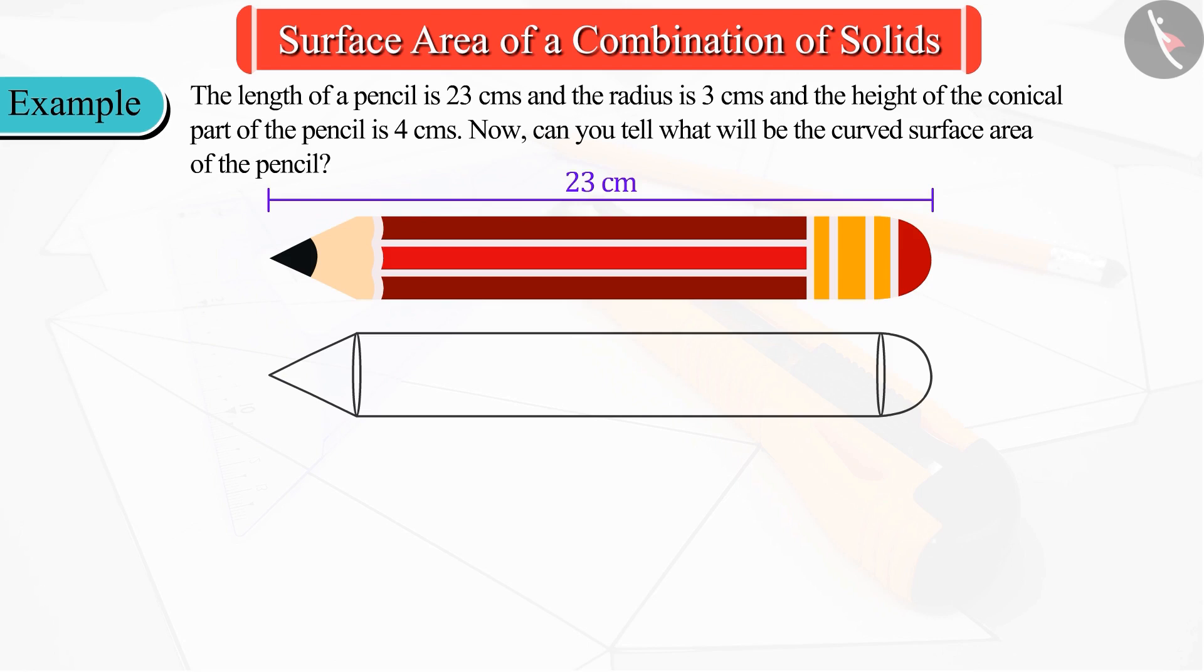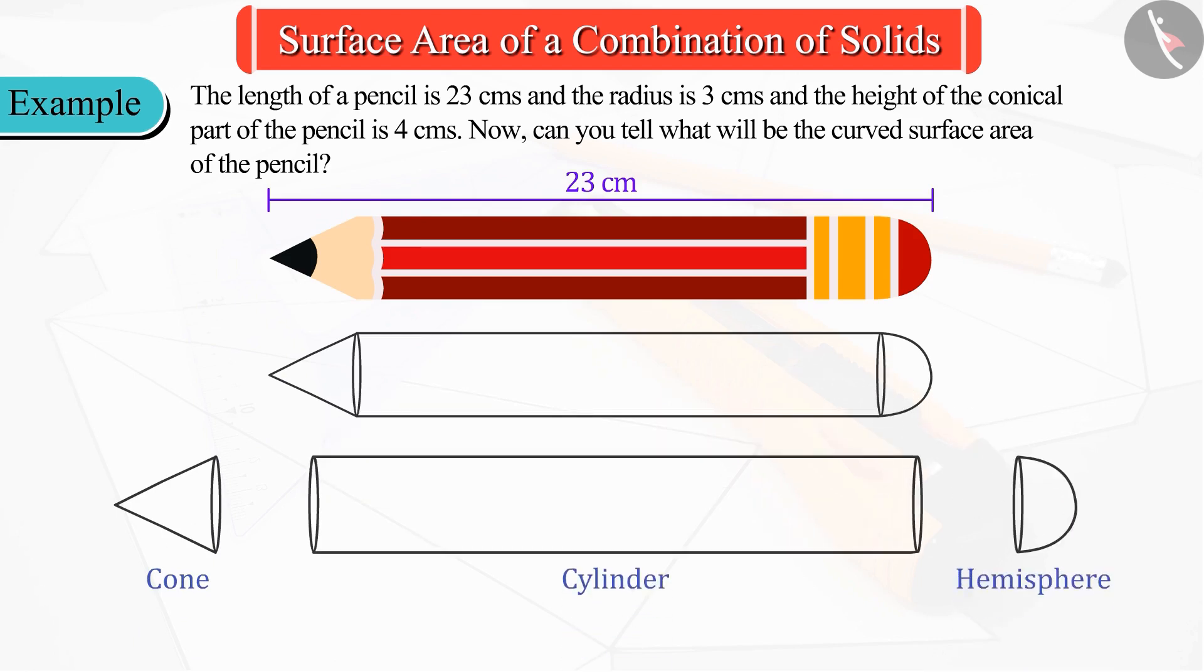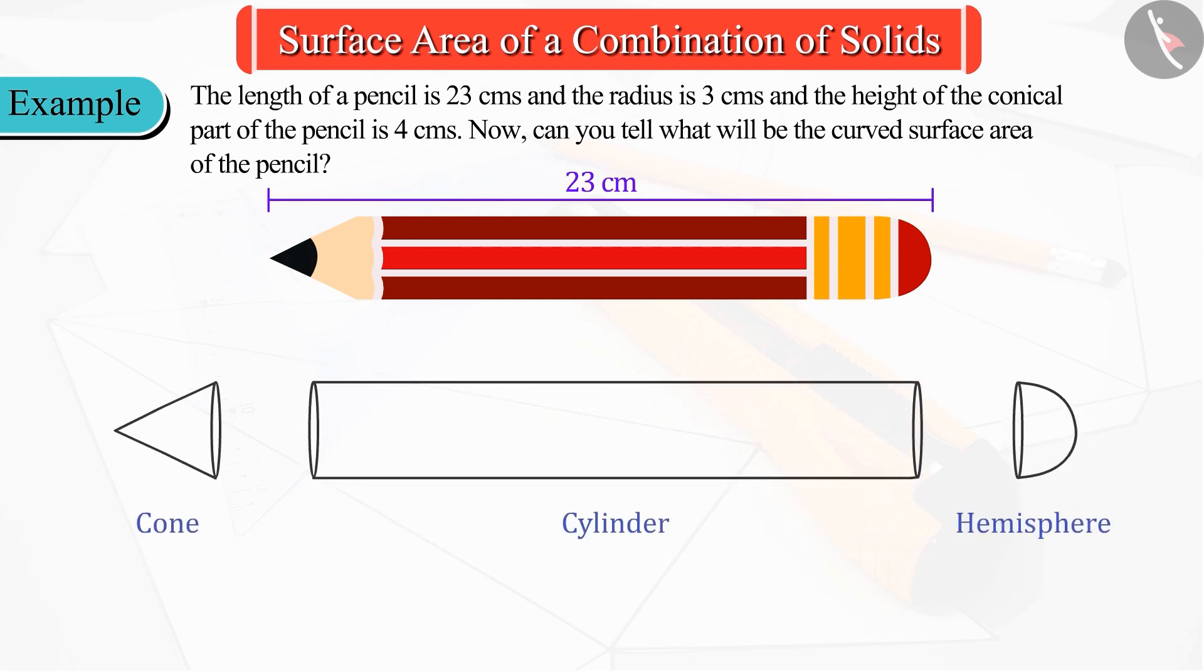But if we look at the figure carefully we can say that its front part is a cone, middle part is a cylinder, and the lower part is a hemisphere where the height of the conical part of the pencil is 4 centimeters.